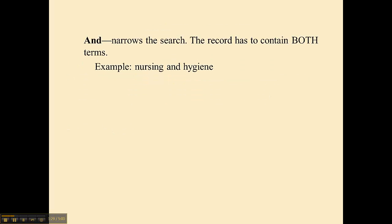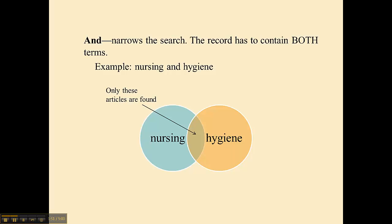The word AND, if I use this word in between two keywords, I'm telling the computer that I want the article to contain both of the keywords. So 'nursing AND hygiene' means I'm going to find the articles that only mention both. To visualize that, this is what it looks like: I've got all the articles about nursing and all the articles about hygiene, but only where they overlap — only the ones that contain both — are going to be returned to me as matches from the database.